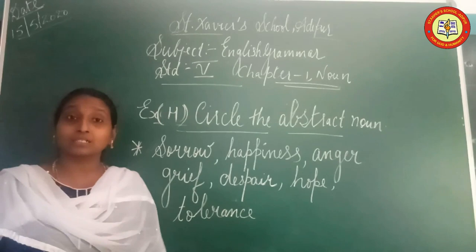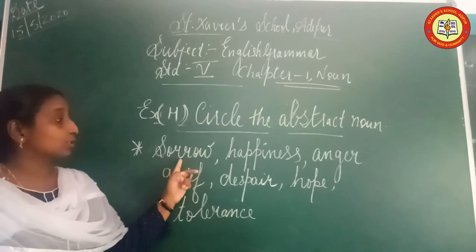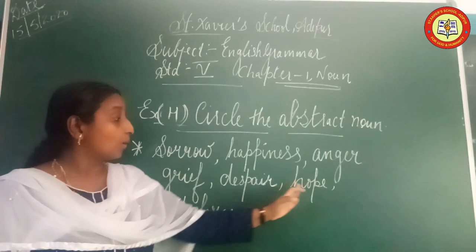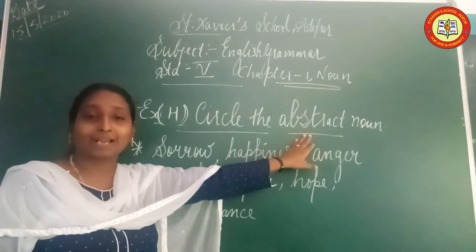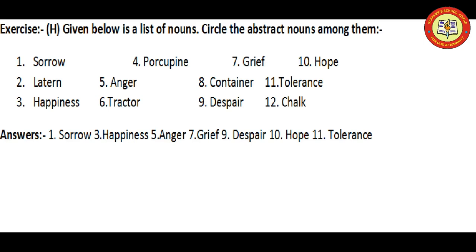Exercise H: Circle the abstract nouns. There are 15 words. The abstract nouns are: sorrow, happiness, anger, grief, despair, hope, tolerance. All these words come under abstract nouns — they represent qualities or feelings.